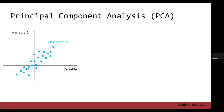Let's say we have a dataset with two variables: variable one on the X axis, variable two on the Y axis, and different observations plotted in a scatter. If you were to draw one line through this data that explains the most variation, where would you draw it? You can draw lines at any angle — call them line one, two, three, four. What would you pick?